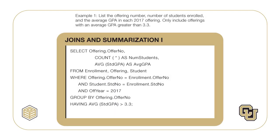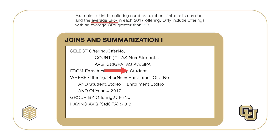Now let's use the critical questions on Example 1, answering the questions before reviewing the associated SELECT statement. For the first critical question involving the tables, the enrollment table is needed because the result includes the number of students enrolled. The offering table is needed because of the condition on offering year. The student table is needed because the result contains the average student GPA. For the second critical question on combining the tables, the offering and enrollment tables must be joined on offer number using a condition with the primary key and foreign key of the tables. The enrollment and student tables must be joined on student number using a condition with the primary key and foreign key of the tables.